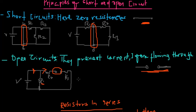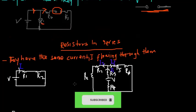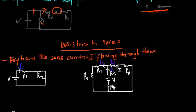Now let's dive into resistors in series. Resistors in series are resistors that have the same current flowing through them. Looking at this example, we have resistor R1 and resistor R2. The current I flows from the voltage source through R1 and then through R2, flowing in one direction and coming back to the starting point.